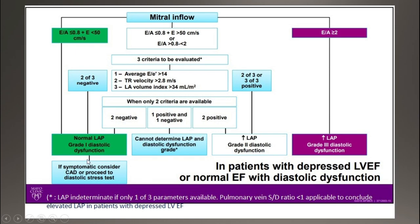In this group — type 1 — if the patient is symptomatic, for example with shortness of breath during physical activity or other symptoms related to heart failure, we should check for coronary artery disease or perform further studies including a diastolic stress test. If the patient does not fall into either of the two groups above, we evaluate three additional parameters. If two of them are positive, the patient has diastolic dysfunction type 2 or pseudonormal. If two of the three are negative, the patient has diastolic dysfunction type 1.